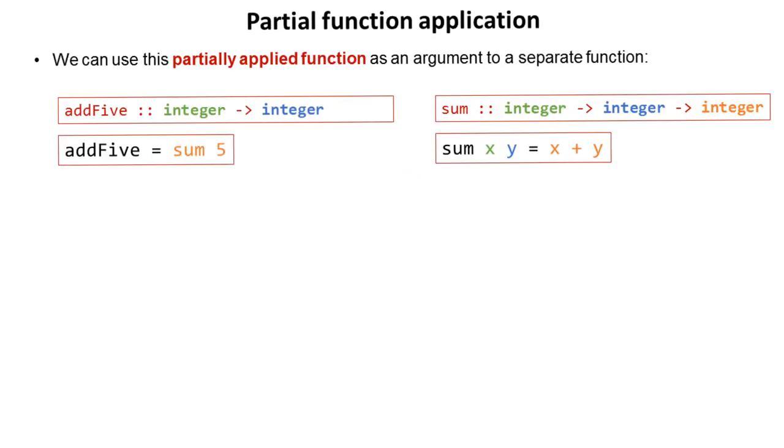we can use this partially applied function as an argument to a separate function. Here's the original function and here's the partially applied function. We've taken sum five—that's partially applied because sum requires two arguments—and we've made that equal to a new function called addFive. Now addFive itself is going to take in an integer and return an integer.